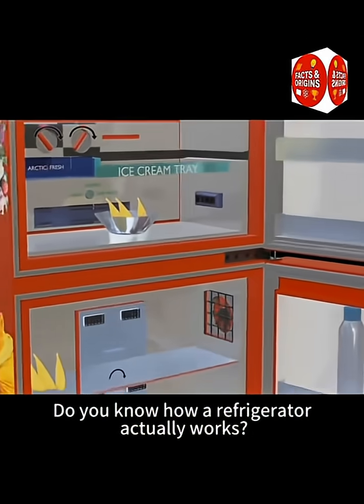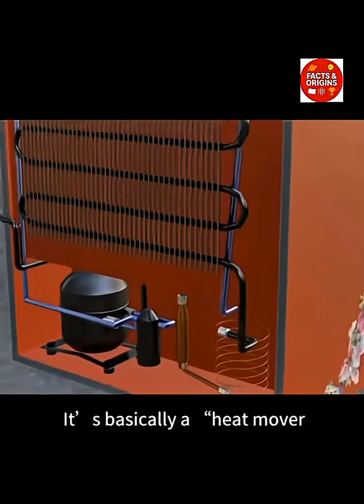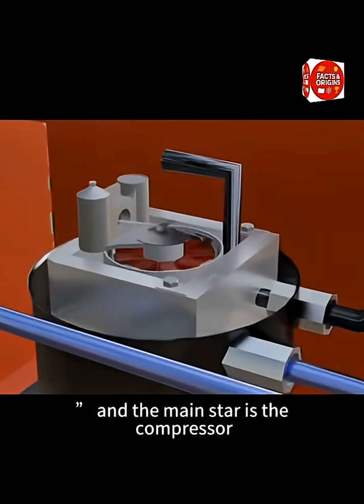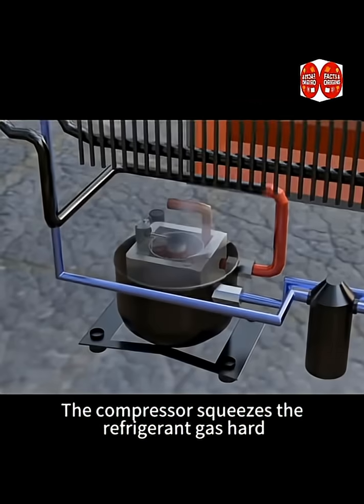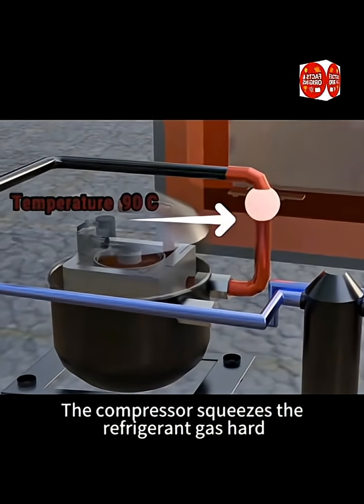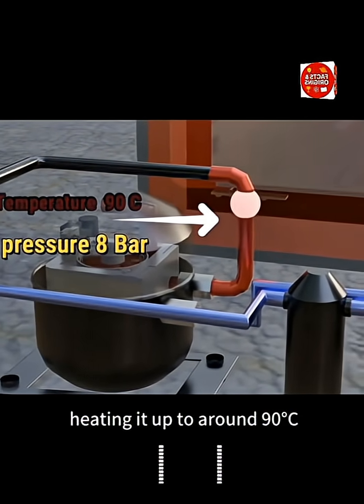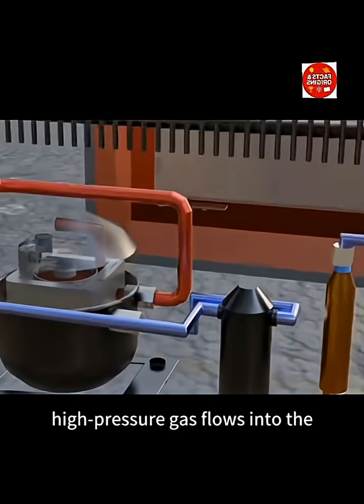A refrigerator is basically a heat mover, and the main star is the compressor. The compressor squeezes the refrigerant gas hard, heating it up to around 90 degrees Celsius. Then this hot, high-pressure gas flows into the condenser coils.